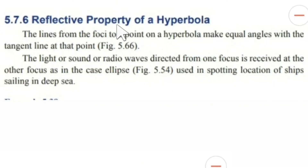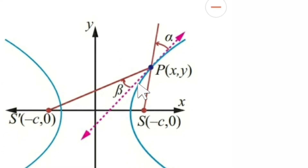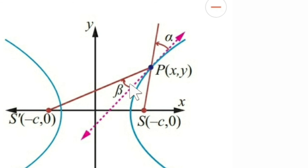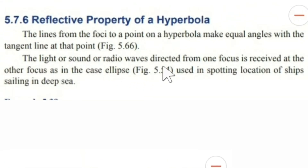Now let us see the reflective property of a hyperbola. The lines from a focus to a point on the hyperbola make equal angles with the tangent line at that point. As in the case of the ellipse, if we draw lines from foci S and S dash to a point P and draw a tangent to the hyperbola at P, the angles alpha and beta made by these two lines are equal. In other words, the light or sound or radio waves directed from one focus is received at the other focus — used in spotting the location of ships sailing in the deep sea.